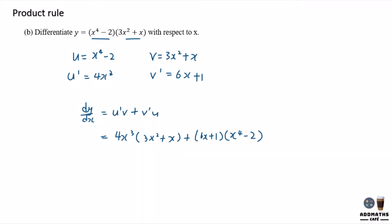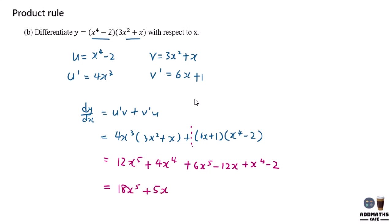In this case, I need to simplify the answer. Both equations have no similarity, so I expand the whole equation by multiplying the brackets in. So 4x cubed times 3x squared gives me 12x to the power of 5 plus 4x to the power of 4, plus 6x times x to the power of 4 gives 6x to the power of 5, minus 12x plus x to the power of 4 minus 2. At the end, add all the same powers: I will have 18x to the power of 5 plus 5x to the power of 4 minus 12x minus 2. And this will be my final answer.